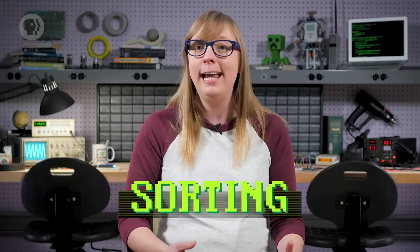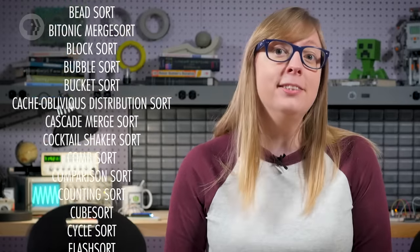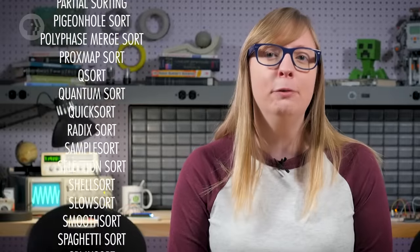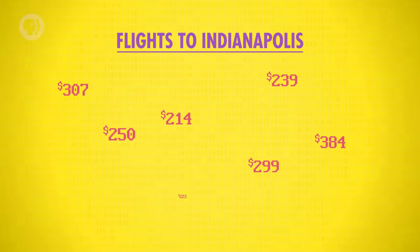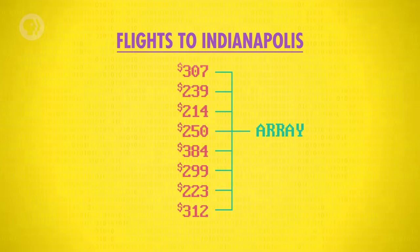One of the most storied algorithmic problems in all of computer science is sorting — as in sorting names or sorting numbers. Computers sort all the time: looking for the cheapest airfare, arranging your email by most recently sent, or scrolling your contacts by last name. Those all require sorting. Computer scientists have spent decades inventing algorithms for sorting, with core names like bubble sort and spaghetti sort. Imagine we have a set of airfare prices to Indianapolis. A series of items like this is called an array.